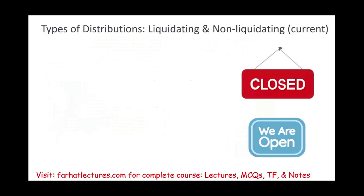There are two types of distribution we need to be aware of when it comes to partnerships: we have a liquidating distribution and a non-liquidating, also called current, distribution.